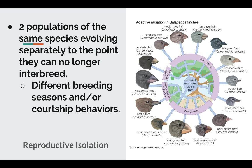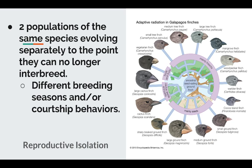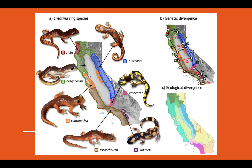Another way speciation can happen is through reproductive isolation. You have the same species that evolve separately. A perfect example is Darwin's finches in the Galapagos — you can see how specialized they are depending on their beak and food source. Over time, not only did their beaks change, but so did their courtship and breeding seasons. We can trace all these finches back to one common ancestor, but today the medium tree finch would not be able to reproduce with the medium ground finch. Similarly, salamanders in California are separated by mountain ranges and different vegetation, and while traceable to one common ancestor, they can no longer interbreed.